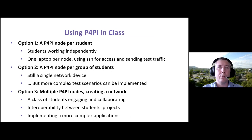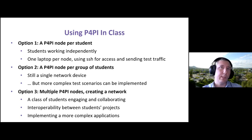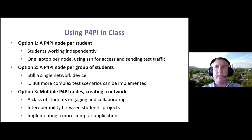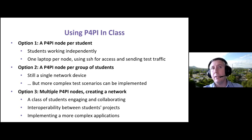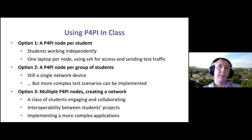We identified three possible options for how PAPI can be used in the classroom. First, each student can work on their own device, using their laptop for both accessing the PAPI node and generating test traffic. Second, a group of students uses a single PAPI node — they connect their laptops to the device, forming a small network and enabling more complex testing scenarios with multiple laptops generating and receiving traffic. Third, multiple PAPI nodes are connected, creating a small network in the lab where a whole class can work together to make the network operable, or implement complex collaborative applications.